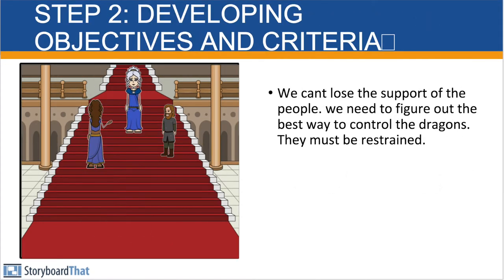Step two of the Rational Decision-Making Model is to develop objectives and criteria. Khaleesi understands that there is an issue. She needs to fix this issue properly. In order to do that, she holds a conference with her trusted advisors. She looks at her advisors and says, 'Guys, we really need to solve this. My dragons, they're going all crazy. They're running around, eating people's cows, burning up goats, messing up everybody's stuff. And we're starting to lose the support of the people. And if we do that, we are not going to be able to obtain the Iron Throne.'